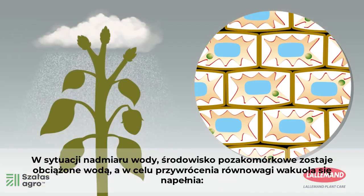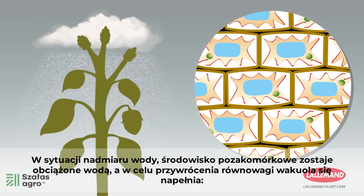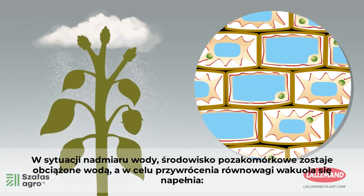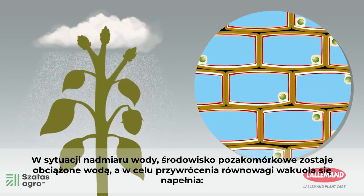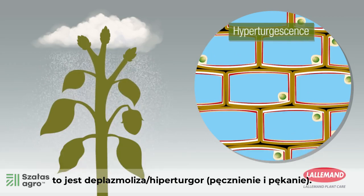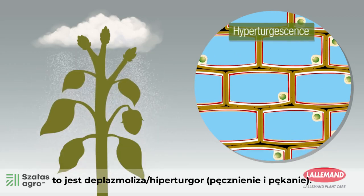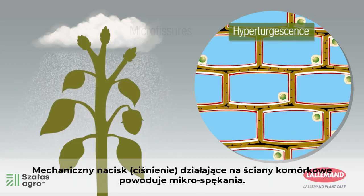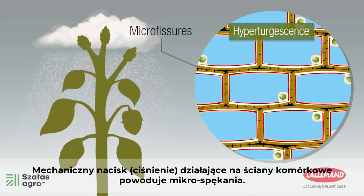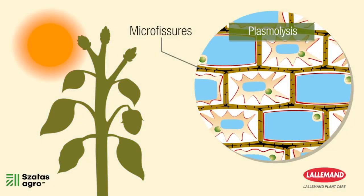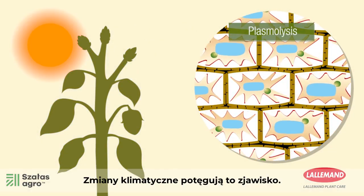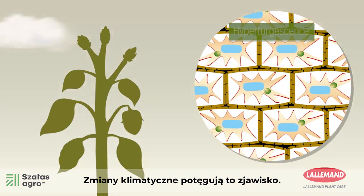In a situation of excess water, the extracellular medium becomes loaded with water, and to restore balance the vacuole fills up. This is hyperturgescence. The mechanical pressure on the cell walls causes micro cracks. Climatic changes amplify this phenomenon.